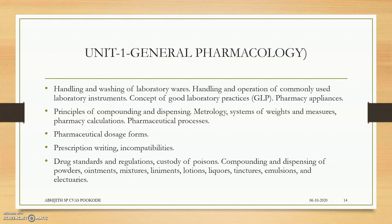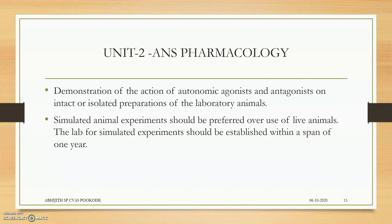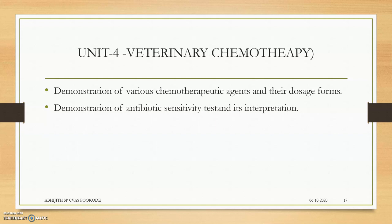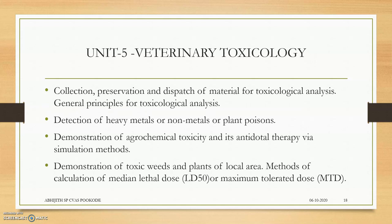In the practical component there are five units. General pharmacology covers handling of laboratory wares, good laboratory practices, pharmaceutical dosage, and prescription writing. NS pharmacology deals with autonomic agonists and antagonists using simulation experiments. CNS pharmacology also uses simulation experiments, handling of lab animals, and regulatory guidelines. In veterinary chemotherapy, we demonstrate various chemotherapy agents and dosage forms, and test antibiotic sensitivity through disc diffusion and other tests. In veterinary toxicology, we demonstrate toxic weeds and plants, heavy metals, plant poisons, agrochemical toxicity, antidote therapy via simulation, and calculation of median lethal dose and maximum tolerated dose.